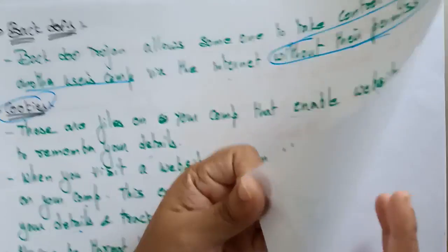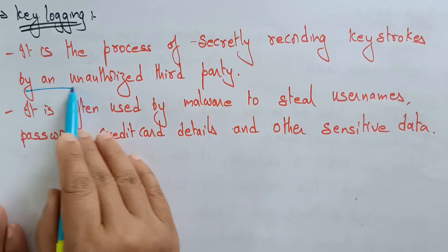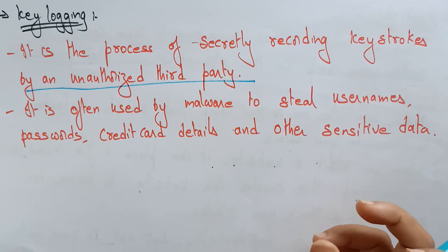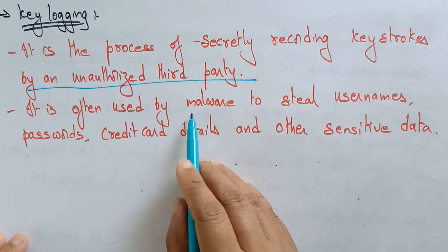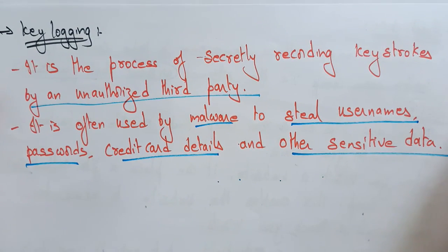The next type of security threat is key logging. Key logging is the process of secretly recording keystrokes by an unauthorized third party. Whatever keys you press on the keyboard are secretly recorded, allowing the third party to discover your passwords, credit card numbers, and PIN numbers. It is often used by malware to steal usernames, passwords, credit card details, and other sensitive data.